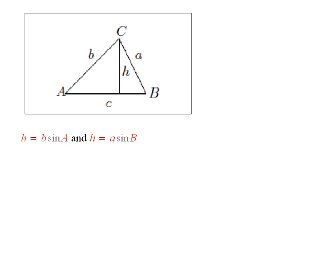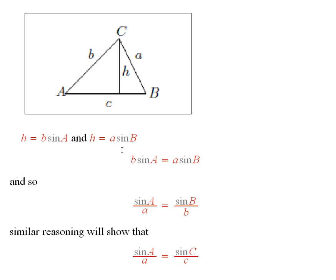So what we have is this here, and we can divide both sides by A, and then divide both sides by B, and that gives us part of the law of sines.